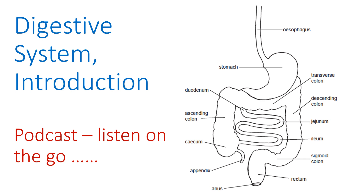To summarise the order: esophagus, stomach, duodenum, jejunum, ileum, cecum, appendix, ascending colon, transverse colon, descending colon, sigmoid colon, rectum, and anus. That's the introductory material for the gastrointestinal tract to memorise.